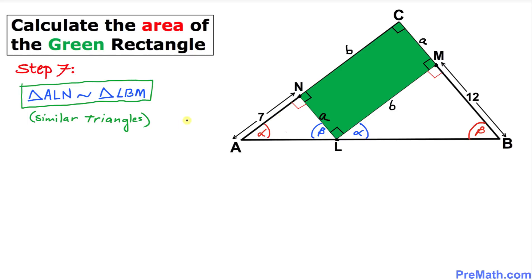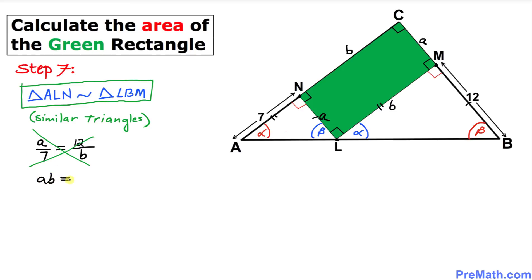Since triangle ALN and triangle LBM are similar triangles, their sides are proportional. Looking at side A and the segment of length 7, we can write the ratio A divided by 7. Setting this equal to the proportion on the other side, we have 12 divided by B. So: A over 7 equals 12 over B. Now let's cross multiply to remove these fractions, giving us A times B equals 7 times 12, which is 84.